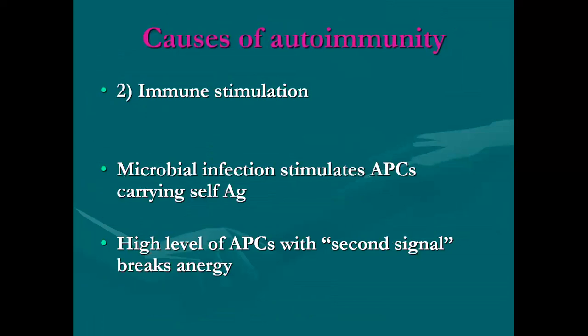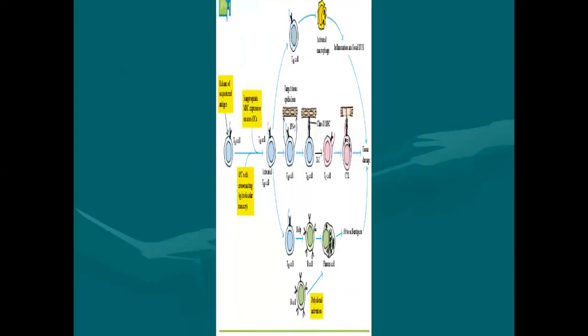Another cause of autoimmune is polyclonal lymphocyte stimulation — cause number two — involving microbial infections stimulating antigen-presenting cells carrying self-antigen, resulting in higher levels of antigen-presenting cells and providing the second signal that breaks anergy.